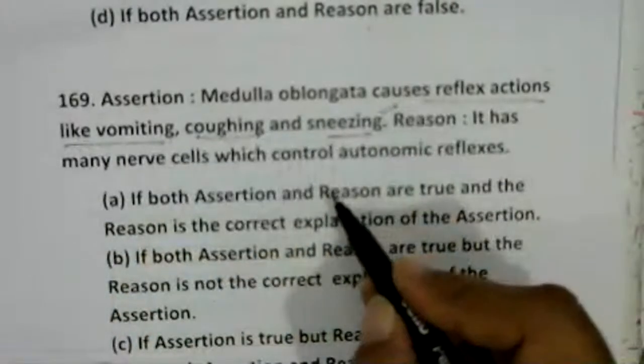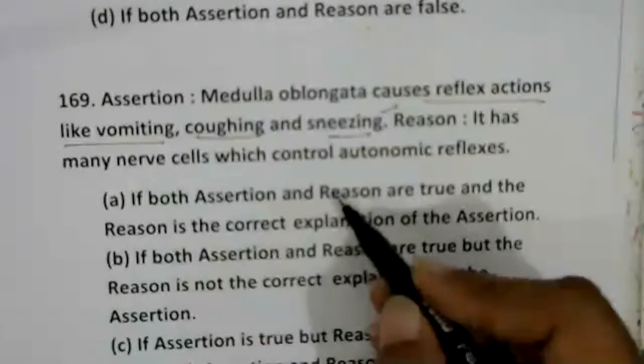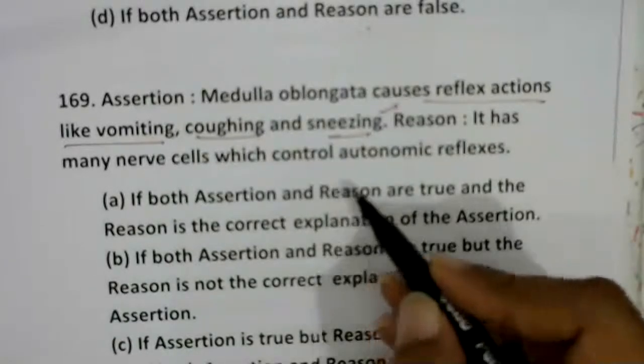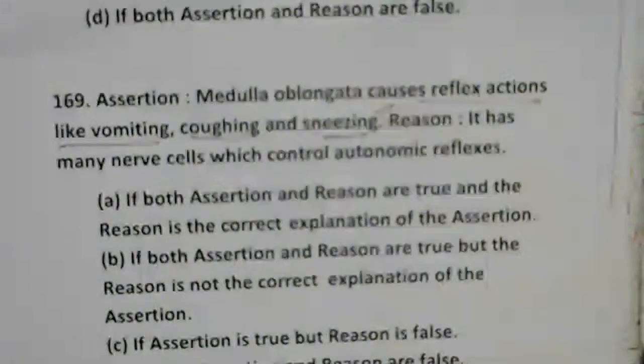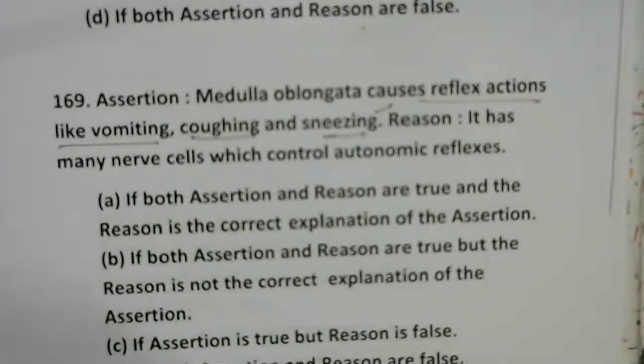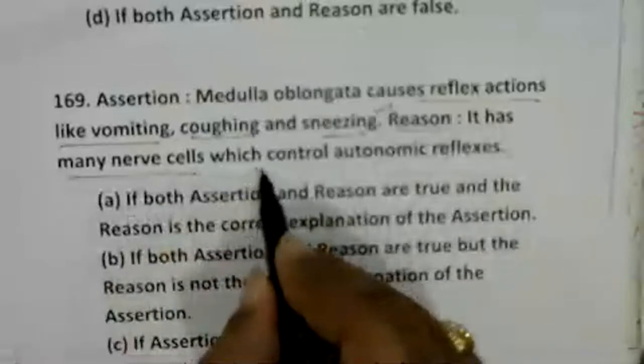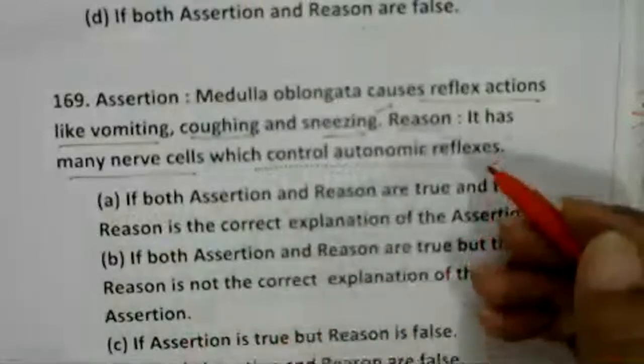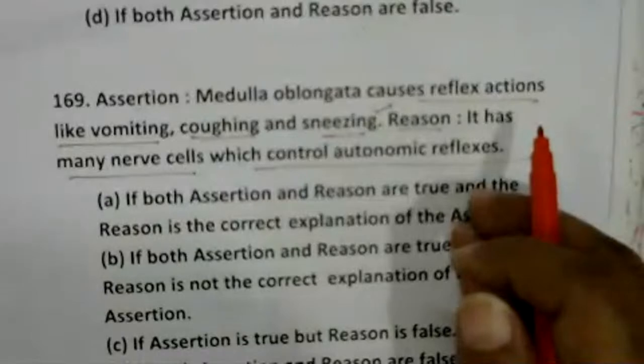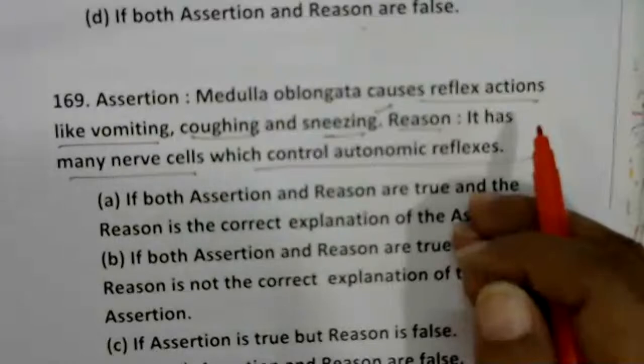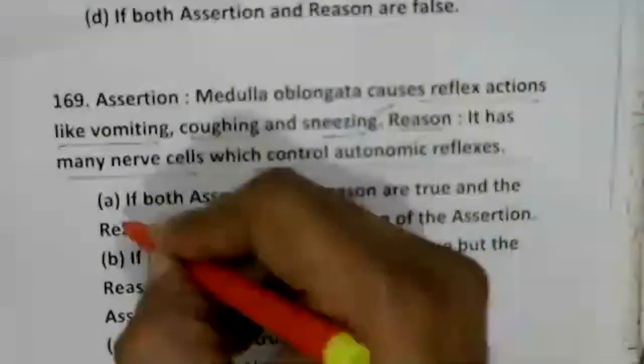Medulla oblongata causes reflex actions like vomiting, coughing, and sneezing — correct. If medulla oblongata is triggered by gases or substances, it leads to vomiting, coughing, or sneezing. It has many nervous cells that control autonomic reflexes — also correct. The autonomic nervous system controls visceral organ activity like intestine, pharynx, and stomach. The reason is the correct expression of the assertion — option A.